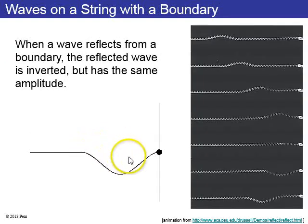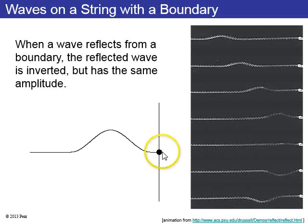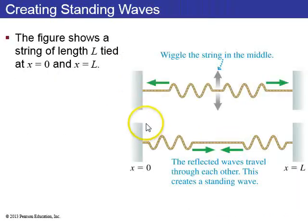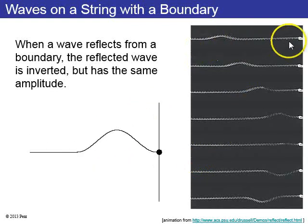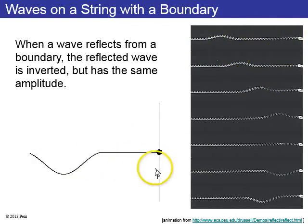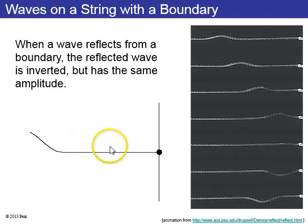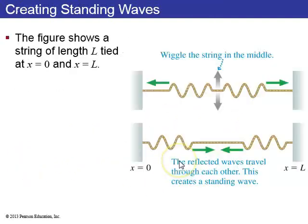If you have a wave on a string that reflects from a hard boundary, you get an inverted wave, but it has the same amplitude. So here is a picture of this happening on a spring, and here's a nice little animation. The pulse comes along, hits the boundary, and then reflects backwards and is inverted.